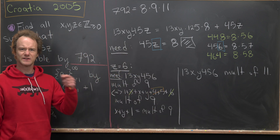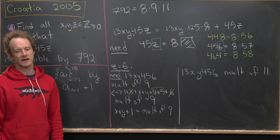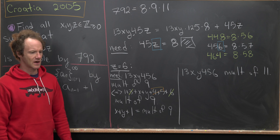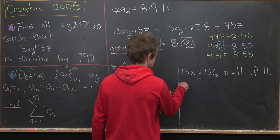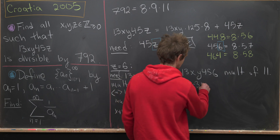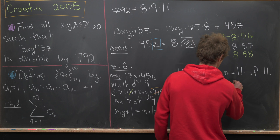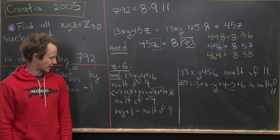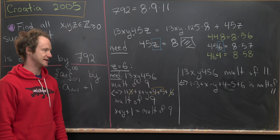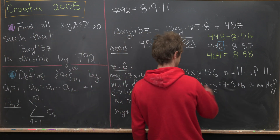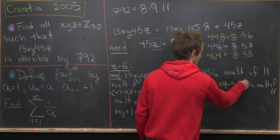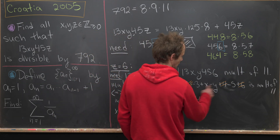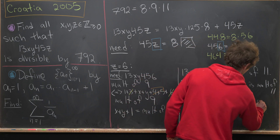For divisibility by 11, we use the alternating digit sum rule. So we need 1 − 3 + x − y + 4 − 5 + 6 to be a multiple of 11. Since 4 + 6 + 1 = 11, those cancel, and we're left with x − y − 8 must be a multiple of 11.